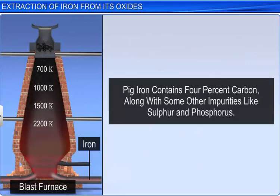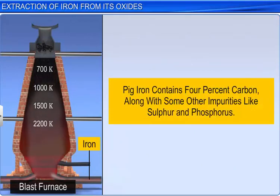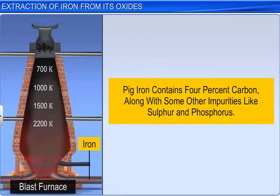The molten iron obtained in this process contains 4% carbon along with some other impurities like sulphur and phosphorus. It is called pig iron.